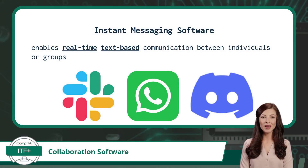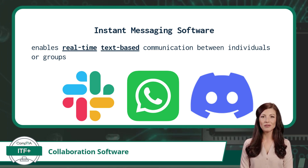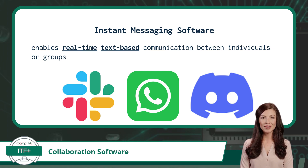Now we have instant messaging software, which enables real-time text-based communication between individuals or groups. It allows users to send and receive text-based messages and file attachments instantly, fostering quick and efficient communication among users regardless of their geographical locations. Three popular examples would include Slack, WhatsApp, and Discord.